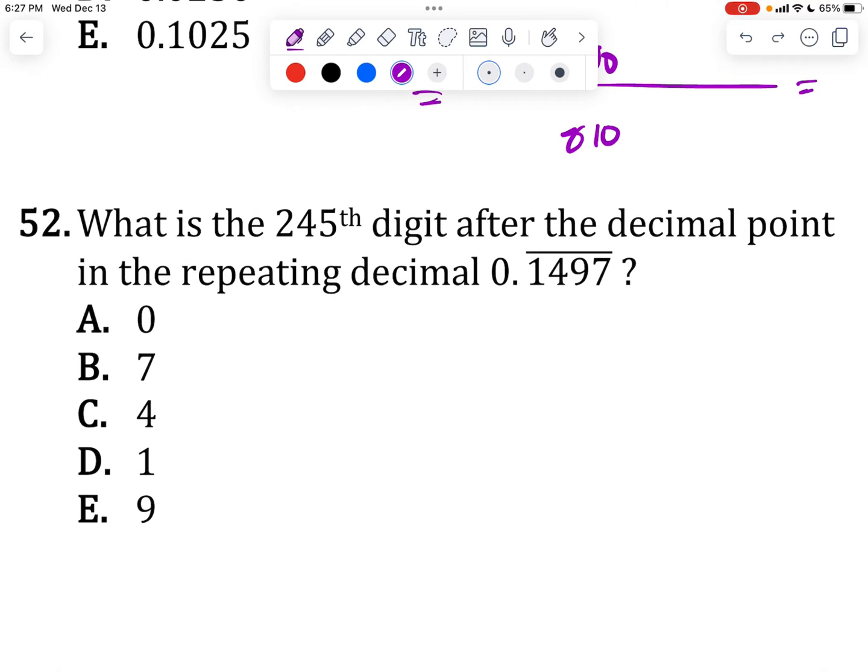Moving on, what is the 245th digit after the decimal point in the repeating decimal here? Obviously in order to write this out, you'd have to write out 0.1497, 1497, 1497, 245 digits down, which is just not practical.